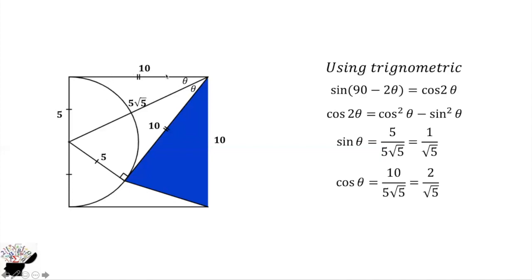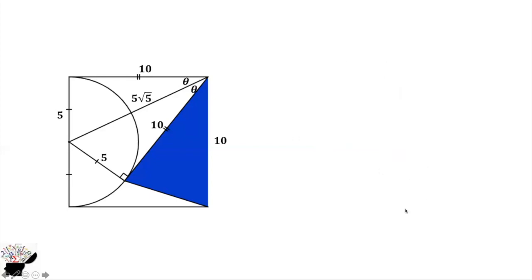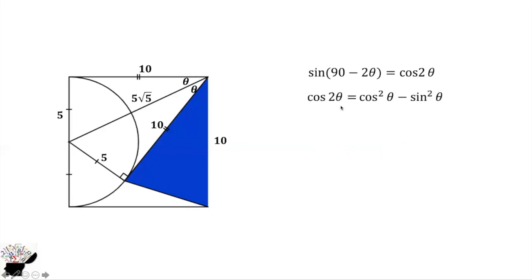Cos theta is adjacent over hypotenuse: 10 divided by 5 root 5, which gives 2 over root 5. Now we apply the identity: cos 2 theta equals cos squared theta minus sine squared theta, which is 4/5 minus 1/5, giving us 3/5.